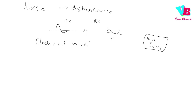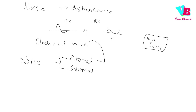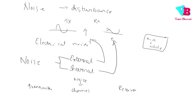We can classify noise into two types. The first one is external noise and the second is internal noise. External noise occurs in the channel, while internal noise is generated within the receiver system. So in the block diagram: Transmitter → Channel → Receiver. The channel introduces external noise, and the receiver system introduces internal noise.